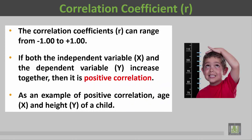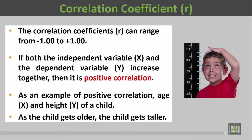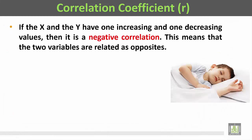An example of positive correlation is the age and height of a child. Age is the independent variable X and height Y is the dependent variable. As the child gets older, the child gets taller — so when age increases, height increases, meaning their relationship is a positive (direct) correlation.